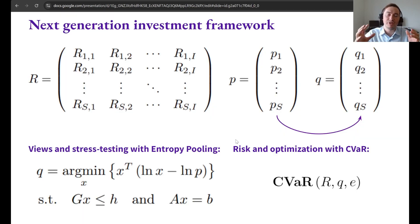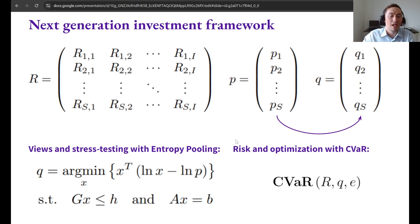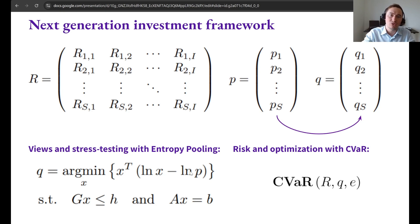The book is about the next generation investment management framework. It's centered around a Monte Carlo simulation that we collect into a matrix called R and associated joint scenario probability vectors. This is much more general than just a mean vector and a covariance matrix, because these are fully general Monte Carlo distributions. We can also apply very sophisticated market views and stress testing to these full general distributions by using a method called entropy pooling.